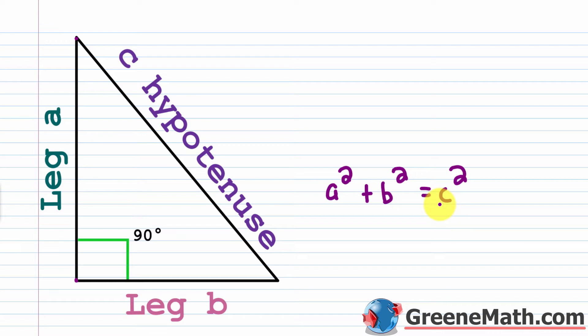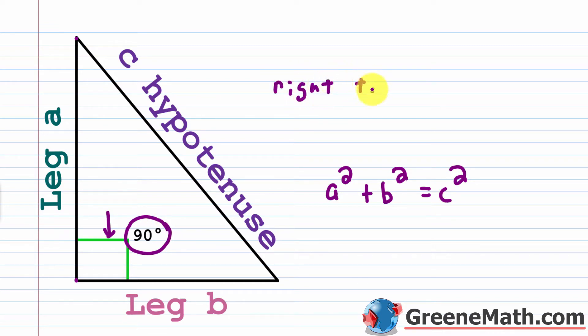The Pythagorean formula tells us about the relationship between the sides of a right triangle. I know some of you probably haven't studied geometry yet since it's usually taken after Algebra 1, so if you don't know anything about triangles, it's not a big deal — you can pick up what you need from today's lesson. You'll notice this symbol here denotes a 90-degree angle, also known as a right angle. When a triangle has a right angle, it's called a right triangle.